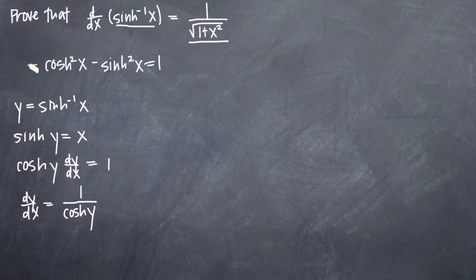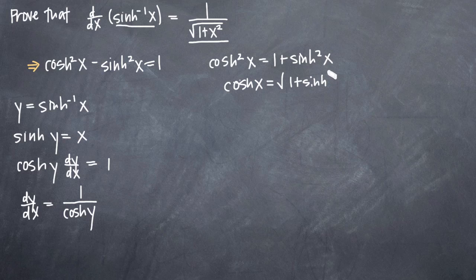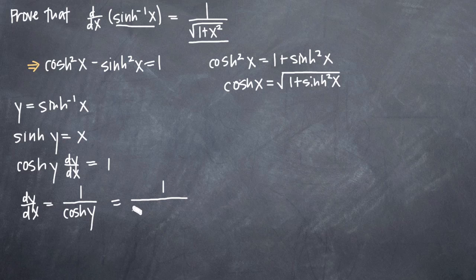We'll use the identity written above. We rearrange it by adding hyperbolic sine squared of x to both sides, giving us hyperbolic cosine squared of x equals 1 plus hyperbolic sine squared of x. Taking the square root of both sides, hyperbolic cosine of x equals the square root of 1 plus hyperbolic sine squared of x. We can now plug this in for hyperbolic cosine of y — the fact that x and y differ is irrelevant since it's just a formula — giving us 1 over the square root of 1 plus hyperbolic sine squared of y.